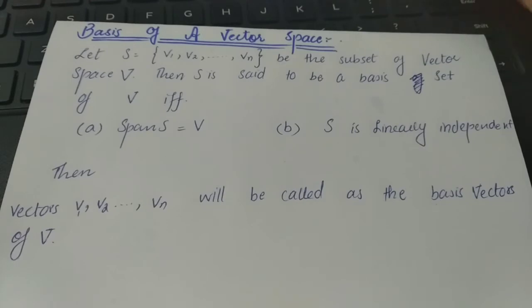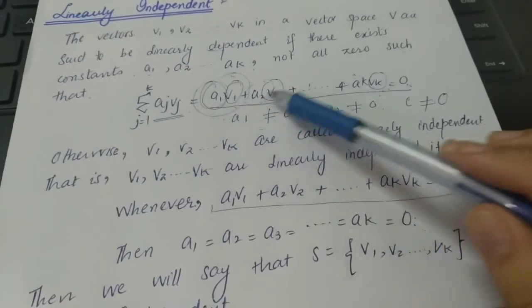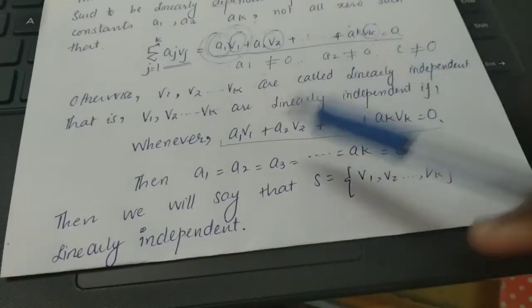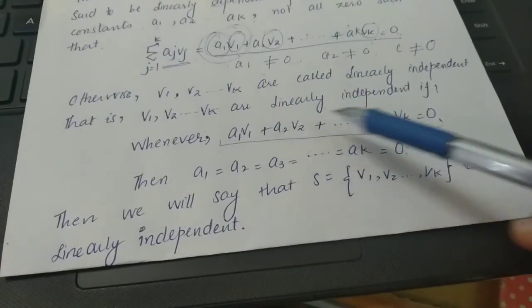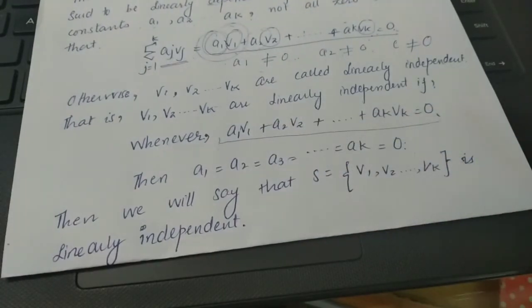Linearly independent means that if we have a linear combination of S elements, then we will say that the vectors are linearly independent. This is my linear combination. If we have constants a1, a2 and an, then we will say that v1, v2 and vn are linearly independent.